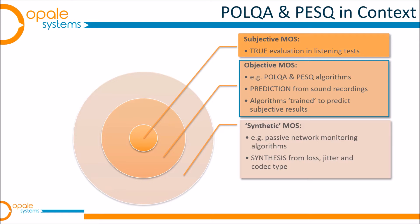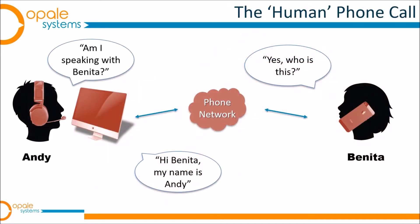In the outer circle we have what we might call Synthetic MOS. This is a class of algorithms which looks at packet behaviour in a network — loss and jitter — and also knows the codec being used, and uses this information to synthesise a Mean Opinion Score. So that's the third way of doing it, which has less to do with actual end-to-end performance but rather more to do with estimating performance based on network behaviour.